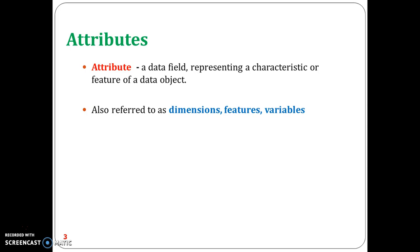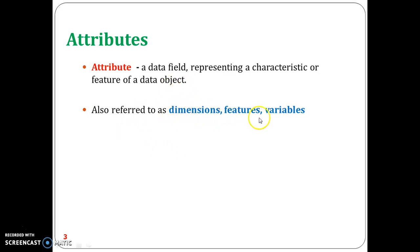Statisticians use the term variable, whereas in the machine learning literature we use the term feature, and when discussing data warehousing we commonly use the term dimensions. So dimension, features, variable, and attributes are all on the same line — they all mean the same thing.